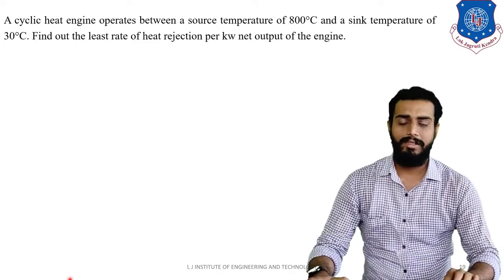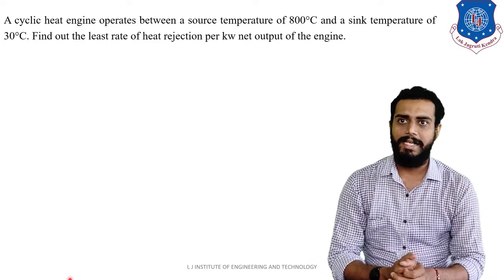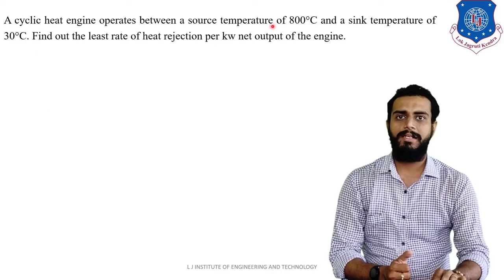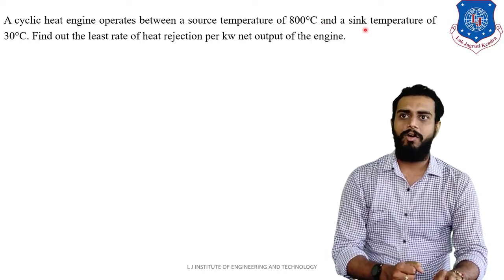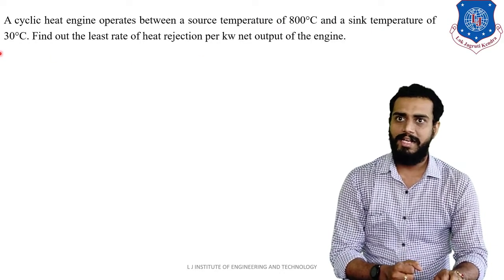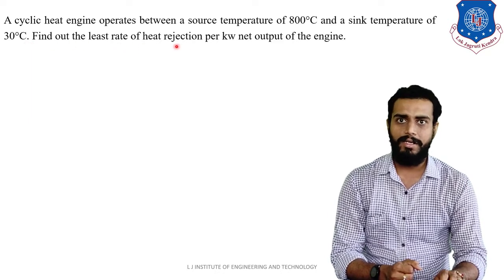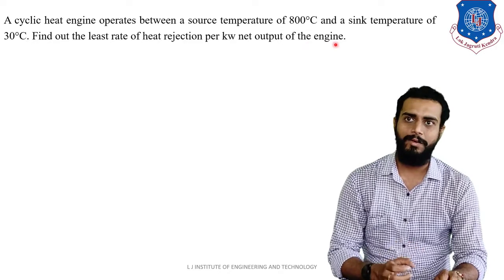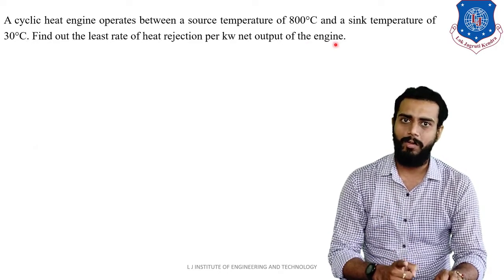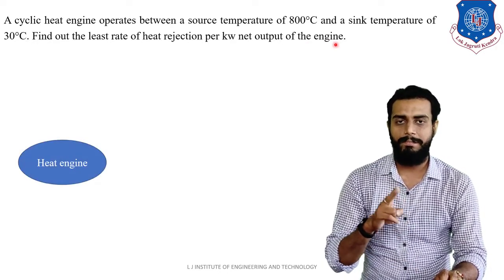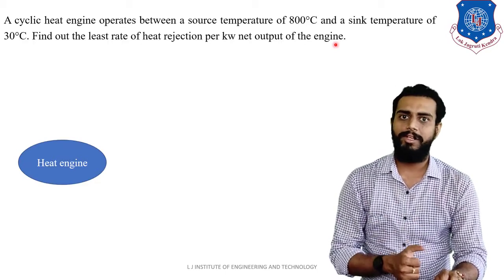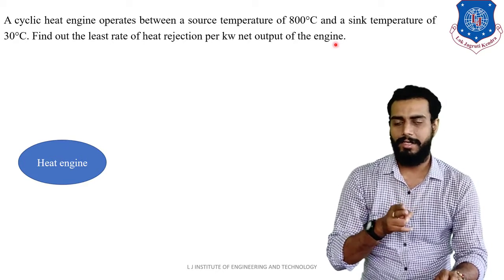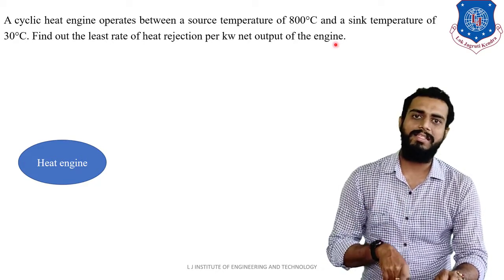As you can see on the screen, a cyclic heat engine operates between a source temperature of 800 degrees Celsius and a sink temperature of 30 degrees Celsius. Find out the least rate of heat rejection per kilowatt net output of the engine. Now here, a cyclic heat engine is given in the problem. If you have seen the previous video of examples, in that video we had two devices — refrigerator and heat pump. Now the device is a heat engine.